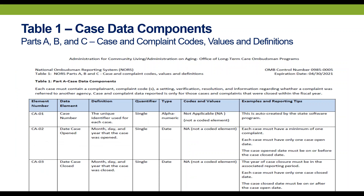Table 1 covers Parts A, B, and C for case and complaint codes, values, and definitions — it's familiar to most of you. This Table 1 is 10 pages long and provides pertinent information including definitions, reporting tips, and examples. All of these resources are available in the handout section on GoToWebinar and on the NORC website.